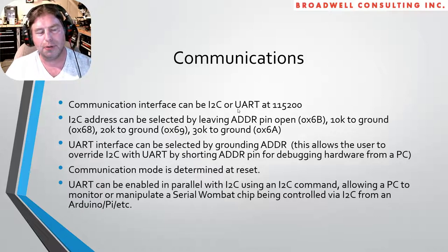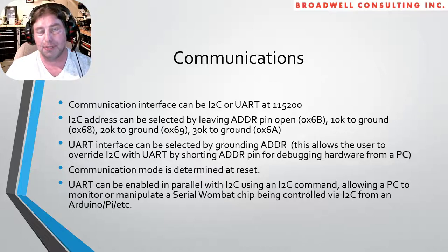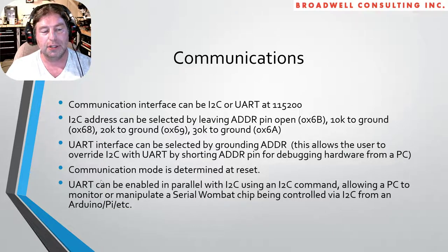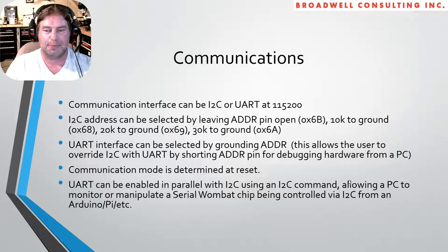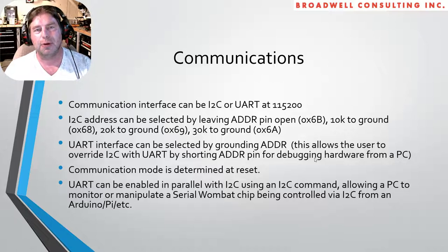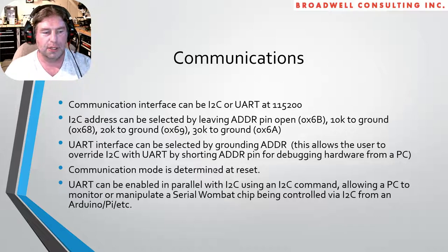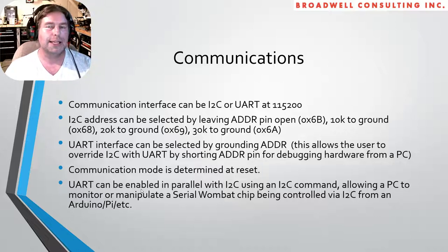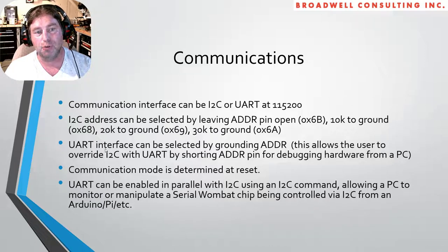Communications happen through a hardware peripheral at up to 115,200 baud. The I²C address is selected by leaving the address pin open or tying it to ground using the charge time management unit — this happens in both the bootloader and the application. The communication mode is determined at reset. The UART can be enabled in parallel with I²C because we have different interrupt routines processing to different buffers from I²C and UART.